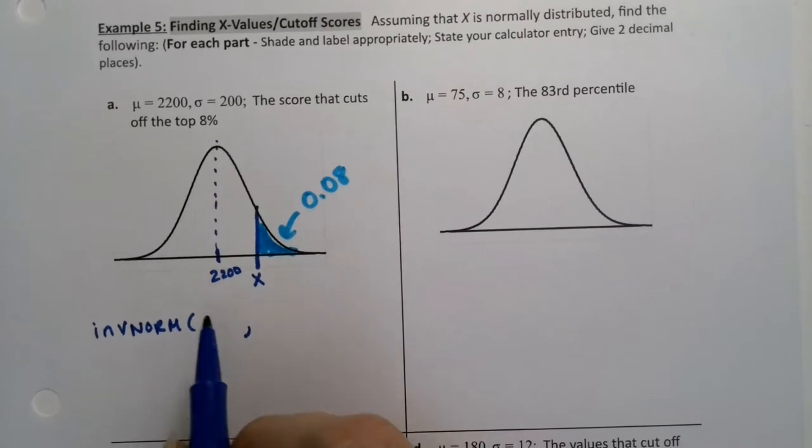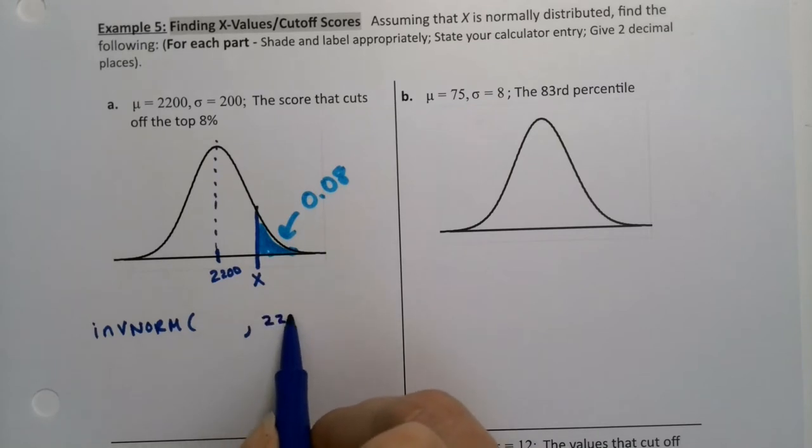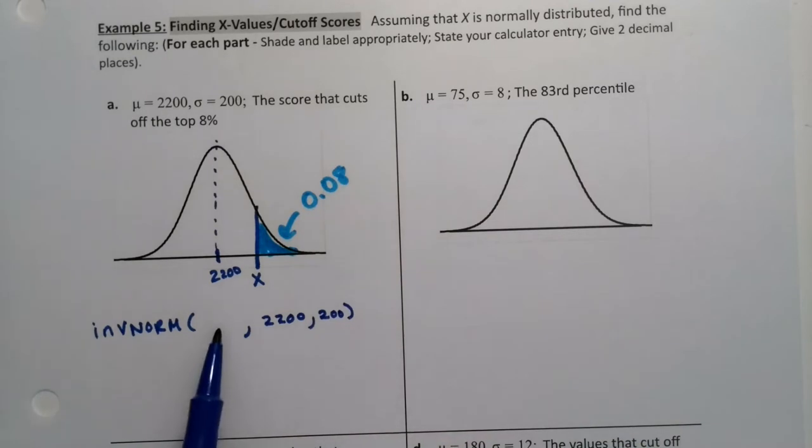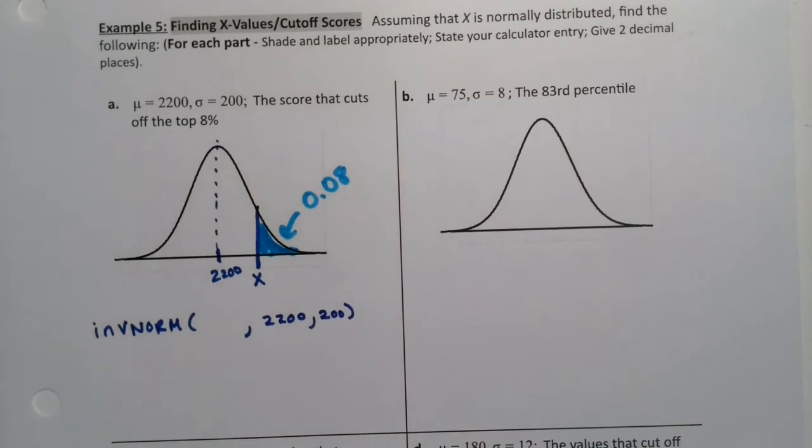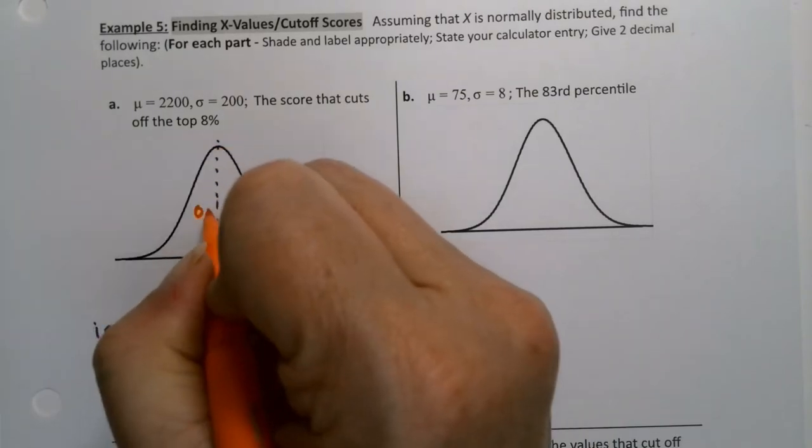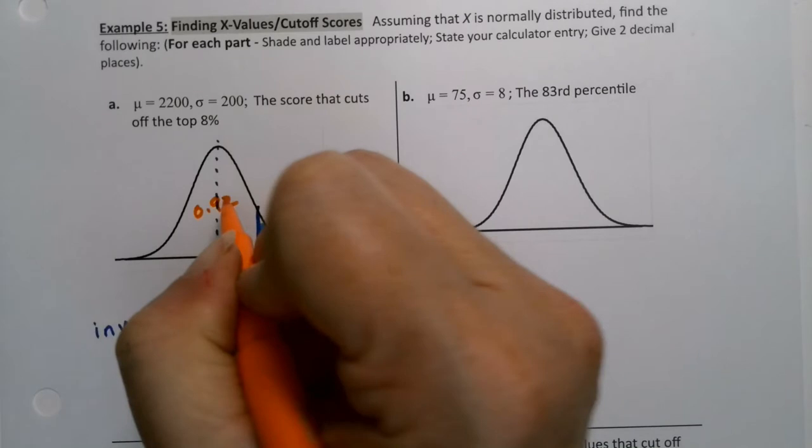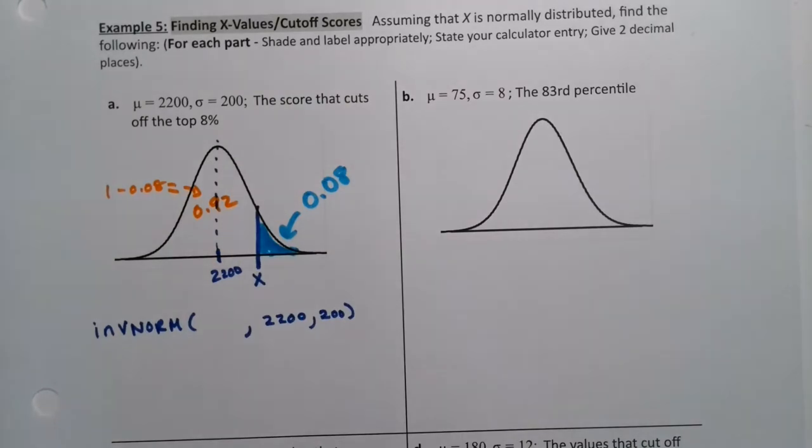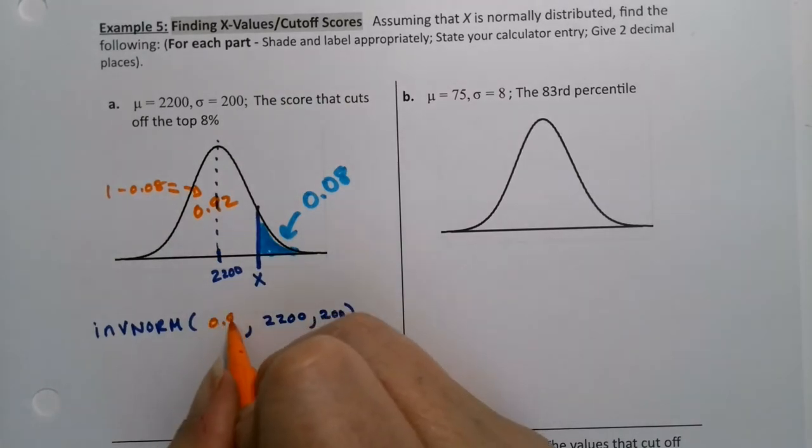So if I use the old calculator way, which is what most people use if they're going to use a calculator, then I want the left tail area, the mu is 2,200, the sigma is 200. I just need that area. It's not 0.08. What it is, is the complement of 0.08. It's 0.92. It's 1 minus 0.08. Right? So I can use 0.92.